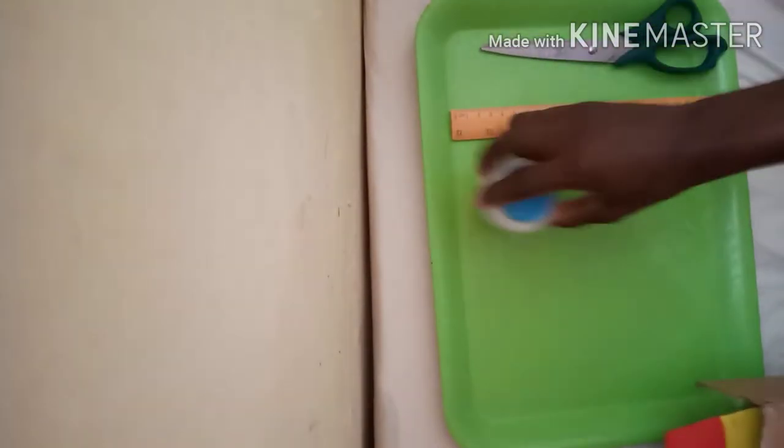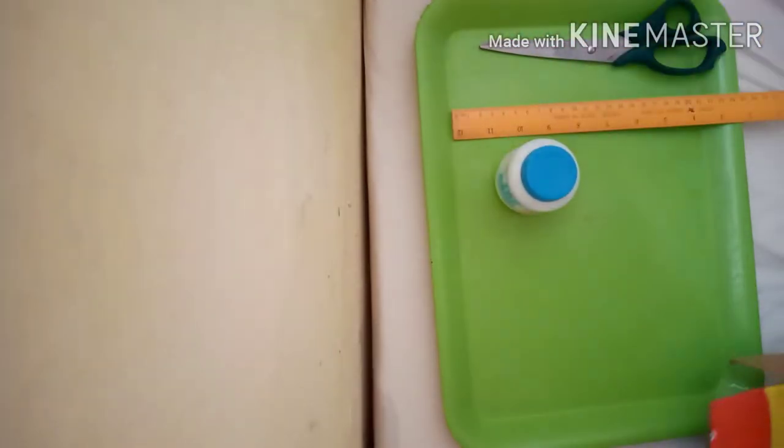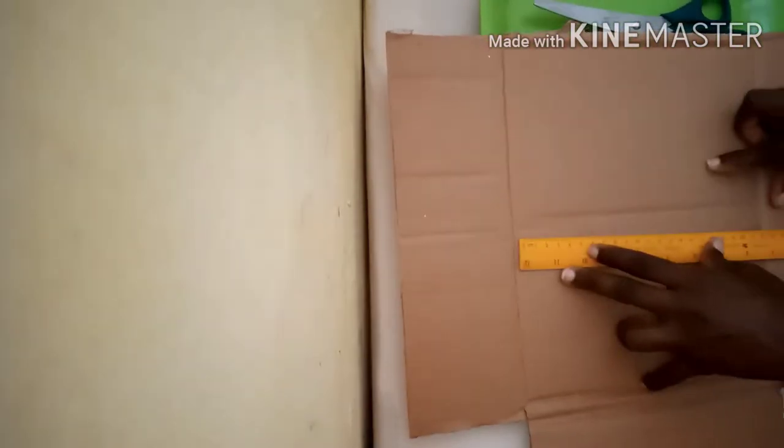Alright, these are some of the things I'm going to be needing for this process. I'll need scissors, a ruler, a pencil, a permanent marker, top bond glue, and cardboard, which is just a cartoon of noodles. I'm using the tray as a place to put things so I don't get dirt on my mattress.